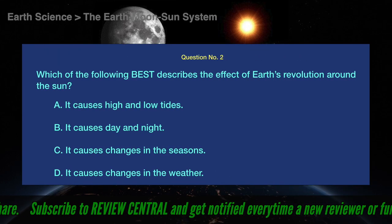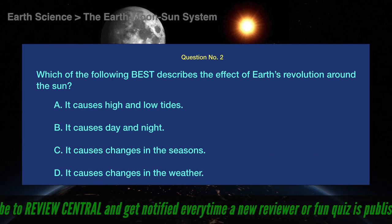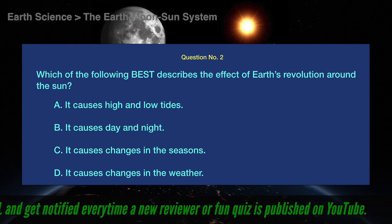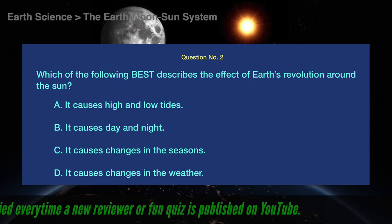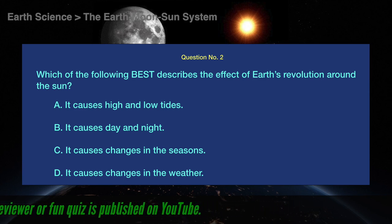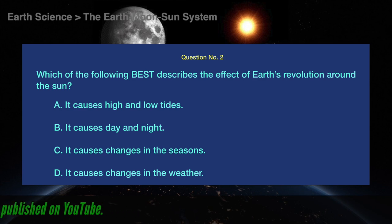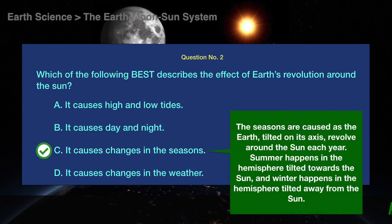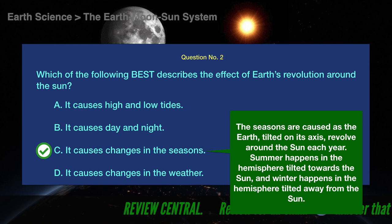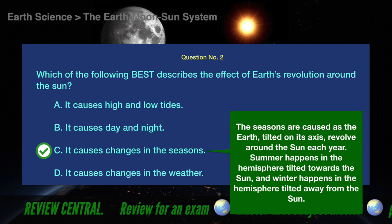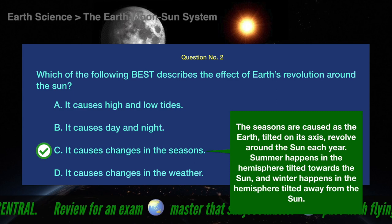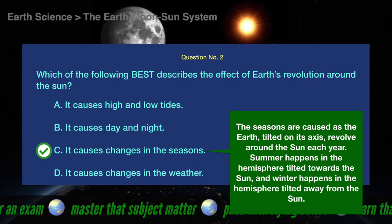Question number 2. Which of the following best describes the effect of earth's revolution around the sun? A. It causes high and low tides. B. It causes day and night. C. It causes changes in the seasons. D. It causes changes in the weather. The correct answer is C. The seasons are caused as the earth, tilted on its axis, revolves around the sun each year. Summer happens in the hemisphere tilted towards the sun, and winter happens in the hemisphere tilted away from the sun.